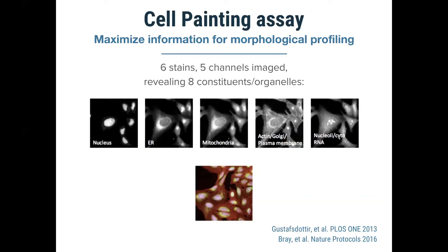Cell painting specifically is one assay developed at the Broad Institute with profiling in mind, designed to characterize cell state in an unbiased way and capture as much cellular information as possible in a single, relatively easy-to-run assay. It has six stains captured in five channels, revealing eight major cellular structures in a single assay. With this we don't need to make an initial hypothesis about which proteins to highlight — it's a generic assay capturing cell structure with many useful properties, including markers for the nucleus, ER, mitochondria, and so on.